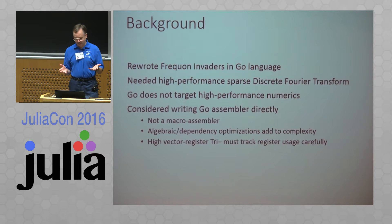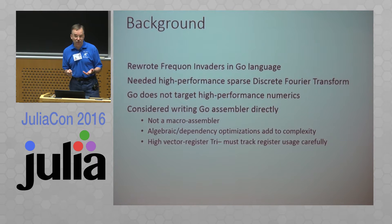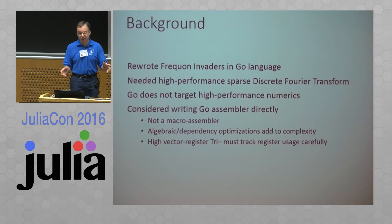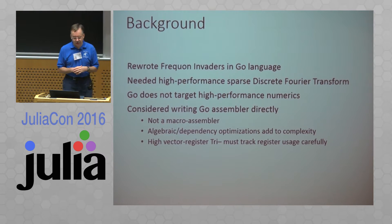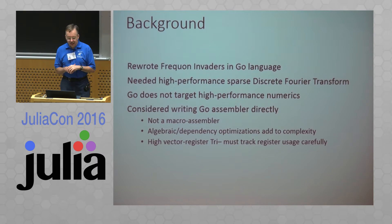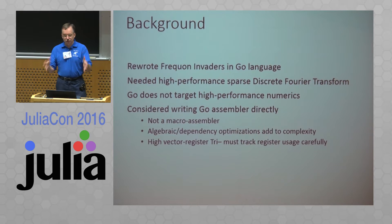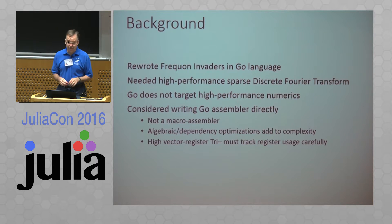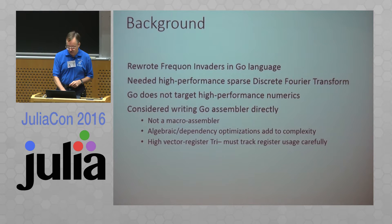The discrete Fourier transform, from its simple mathematical definition, would be straightforward to write in assembly. But I wanted to do a bunch of fancy optimizations to reduce the amount of floating point calculations, so it starts to get pretty hairy. In particular, I'm pushing the vector register pressure as high as it can go, so it's tough to keep very careful track of the registers. So I said, use Julia to write the code for me.